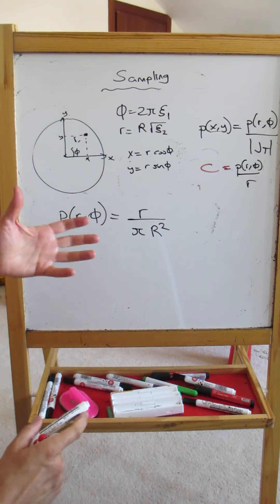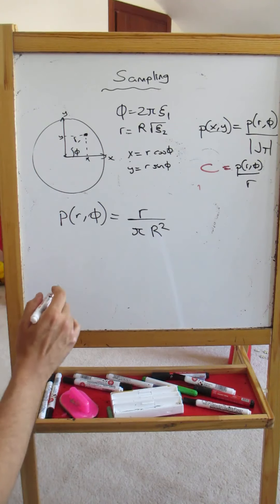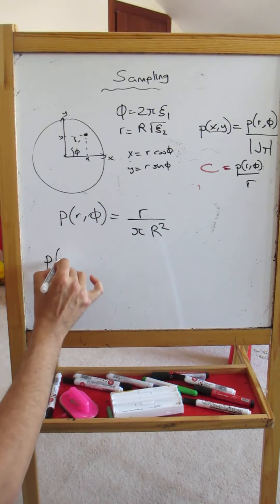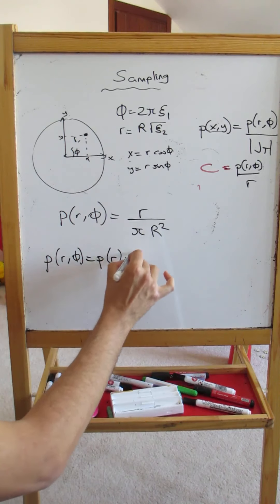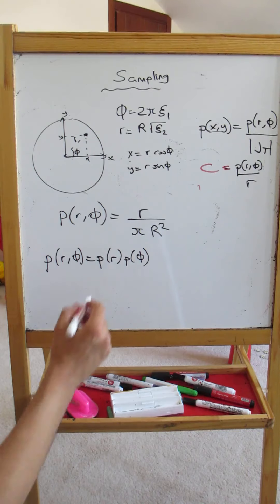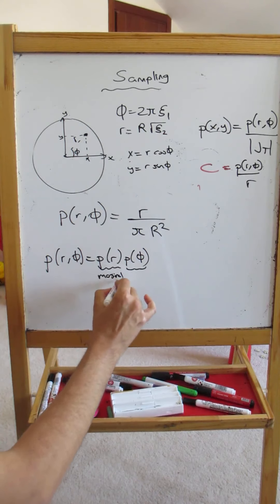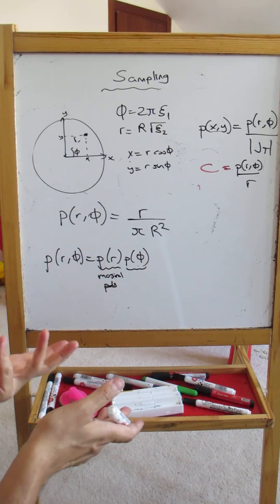Now, in order to sample from this joint PDF, it really helps if this is separable. So if we can actually write this as follows: if we can write the joint PDF like p(r,phi) equals p(r) times p(phi), it's going to be really helpful. And each of these are marginal PDFs. They must also integrate to one in their own domain.